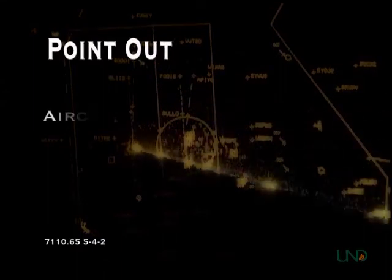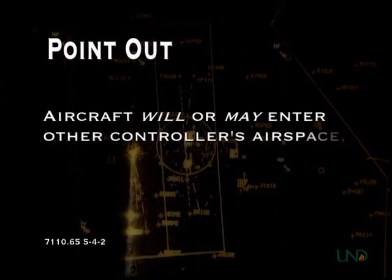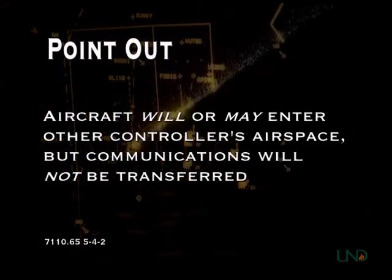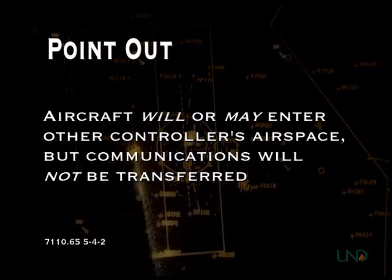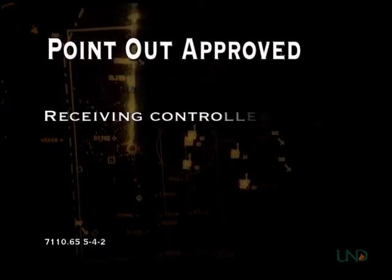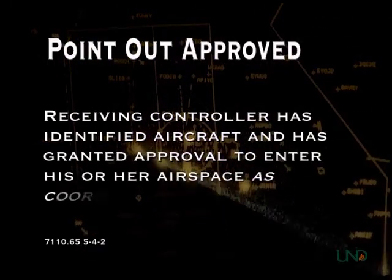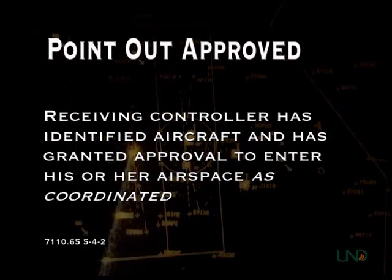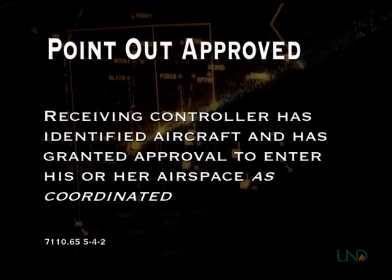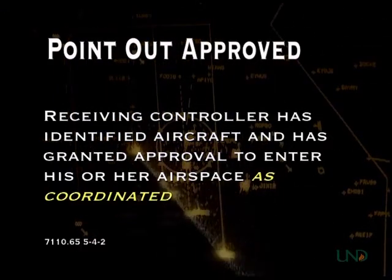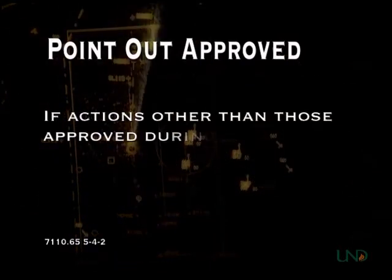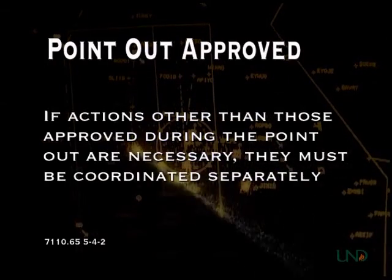A point out is a physical or automated action to transfer the radar identification of an aircraft to another controller if the aircraft will or may enter the airspace of another controller and radio communications will not be transferred. Point out approved means that the controller receiving the point out has identified the aircraft and has granted approval for that aircraft to enter his or her airspace as coordinated without the transfer of radio communications. The phrase 'as coordinated' means that the receiving controller has approved the requested actions of the other controller. If the other controller needs to do something else with the aircraft, that action must be coordinated separately.